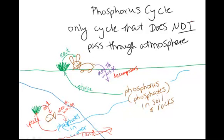Notice this is the only cycle now that's not passing through the atmosphere in gas form, but it's cycling through our water, cycling through our land, cycling through our living organisms on our planet. That completes the phosphorus cycle, the last of our cycles, and thanks for watching.